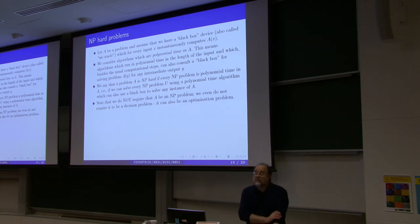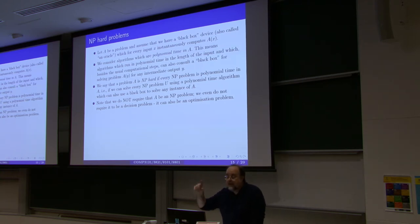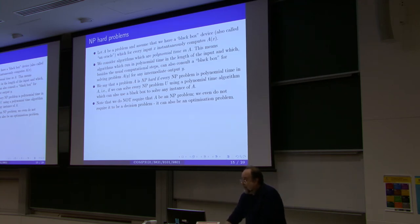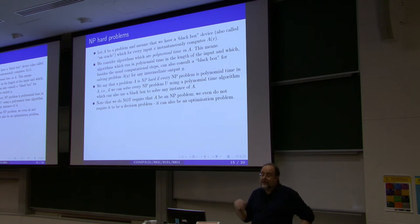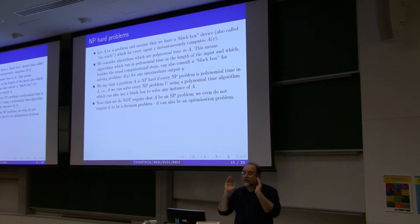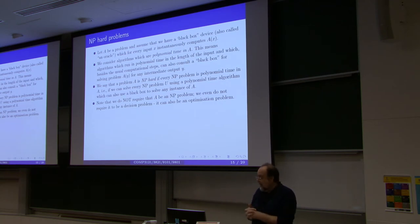The traveling salesman problem in its optimization version is an example of an NP-hard problem. You are given a map with all cities and all the distances between any two cities. The problem is to find a tour of all the cities that is of minimal possible length. Notice this is not a decision problem — it's not a yes-no problem. It's an optimization problem. But if we had a coprocessor that, when you give it a graph, can produce an optimal tour, then clearly you can solve the traveling salesman decision problem.